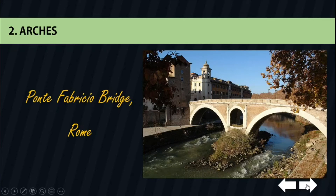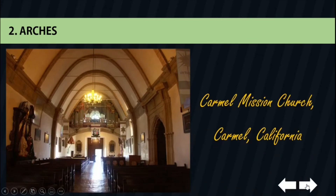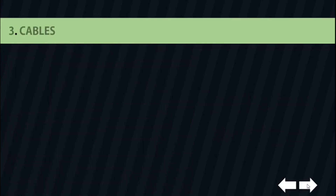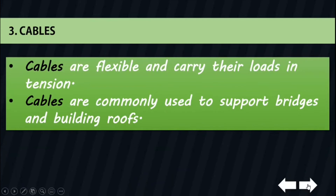Our second example is the Carmel Mission Church. The interior of the Carmel Mission Church was built in 1793. The design of the walls curves inward towards the top, and the roof consists of a series of inverted catenary arcs built of native sandstones acquired from the nearby Santa Lucia Mountains. The third one is cables. Cables are flexible and carry their loads in tension. They are commonly used to support bridges and building roofs.